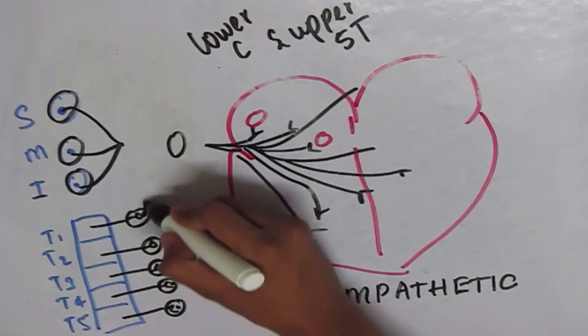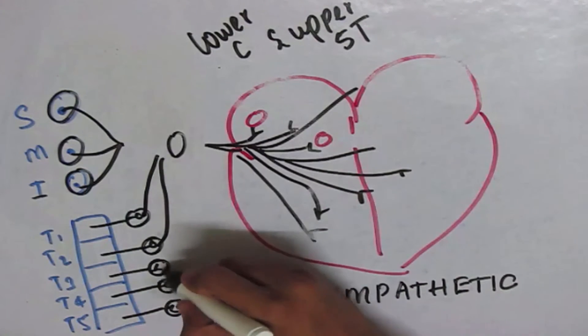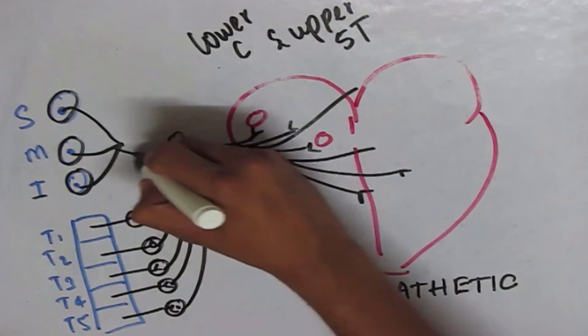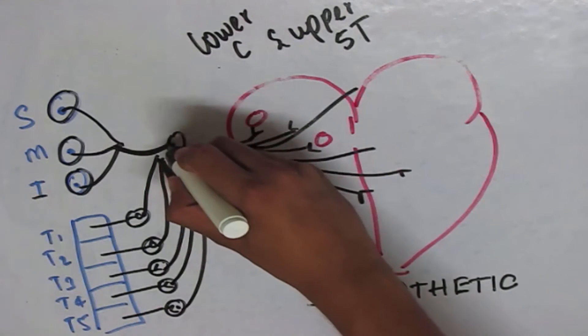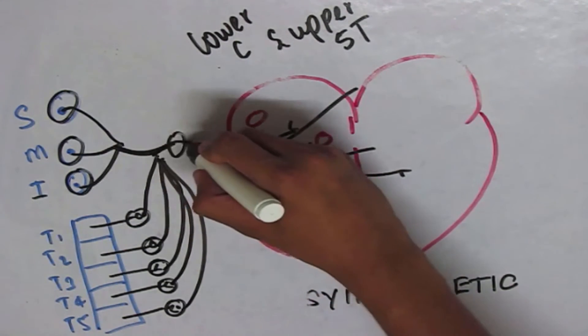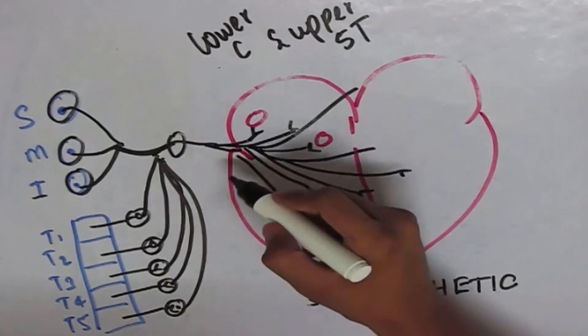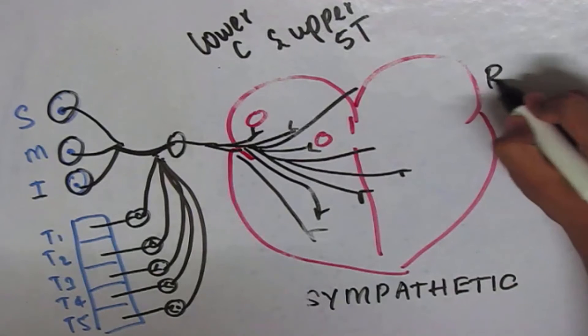They all converge and become the sympathetic trunk and they supply the various parts of the heart. The sympathetic fibers are divided again into right and left.